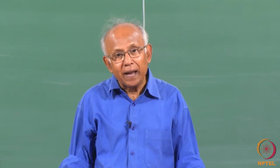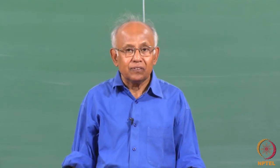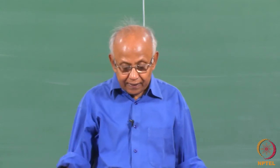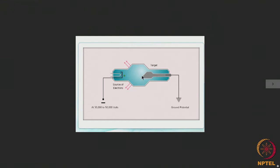The method is known as chemical analysis by X-ray fluorescence. As we are all aware, in an X-ray tube we have a target and a source of electrons. If a target is made up of a particular element, then the striking electrons will produce, in addition to the white radiation, characteristic radiations also, depending on the excitation voltage.